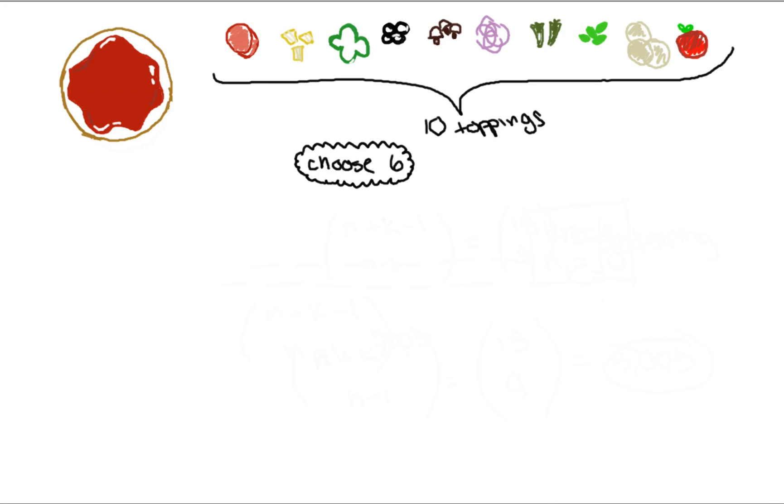My favorite pizza place offers 10 different toppings to choose from, however, I'm only allowed to choose 6 without paying extra. How many different pizzas can I put together if I can choose the same topping multiple times?